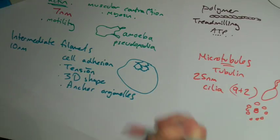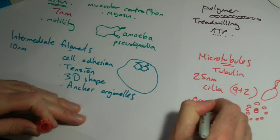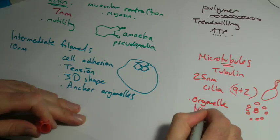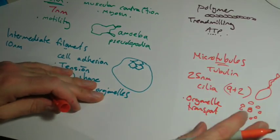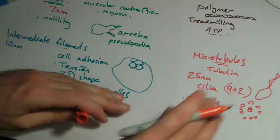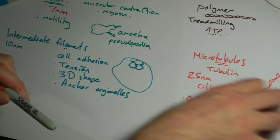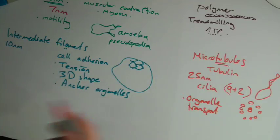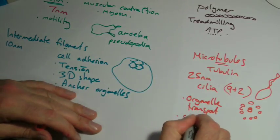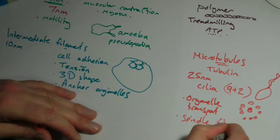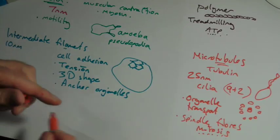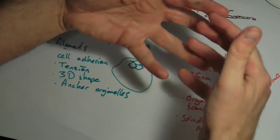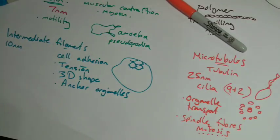They're also involved in organelle transport, so things like mitochondria, which might be moved around inside the cell, are moved along these microtubules. These are the ones that look like little tracks. Another crucial one is these are basically what makes the spindle fibers in mitosis. If you've done mitosis, these are the things that pull the chromosomes apart.